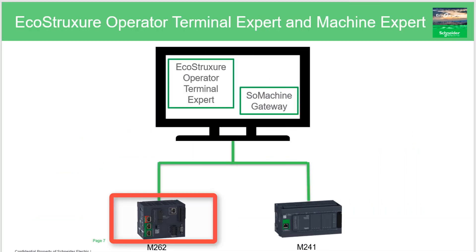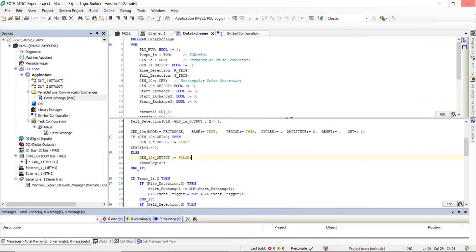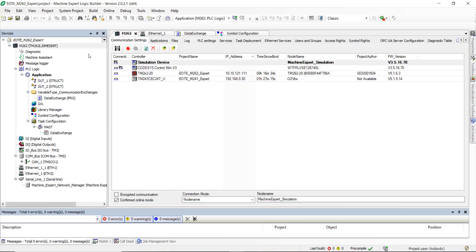In the second example we are going to use the M262 PLC. The previous steps to generate and to import the XML file are the same. Let's switch to EcoStruxure Machine Expert to download the PLC application. Display the controller list.